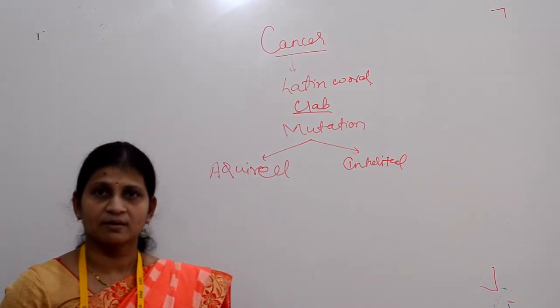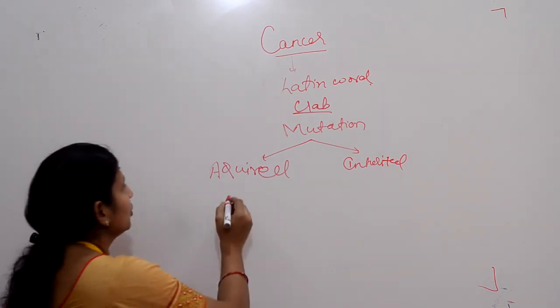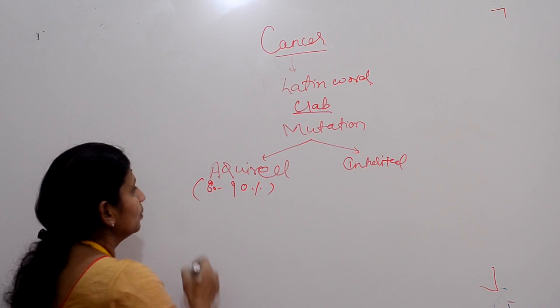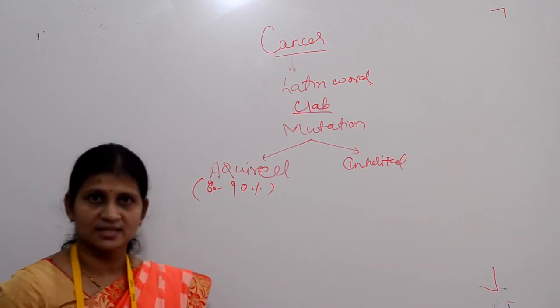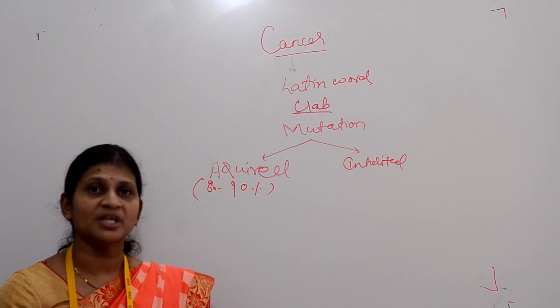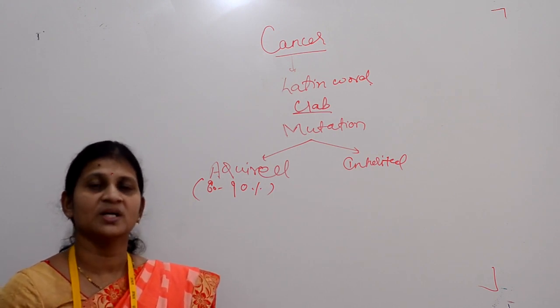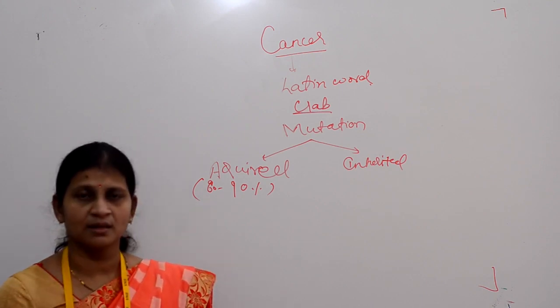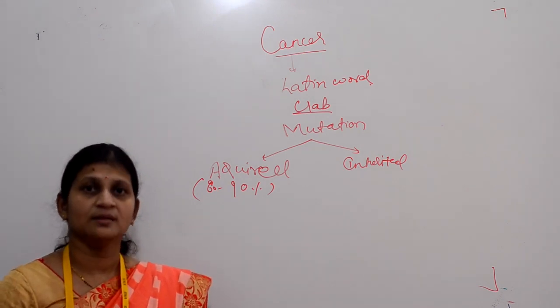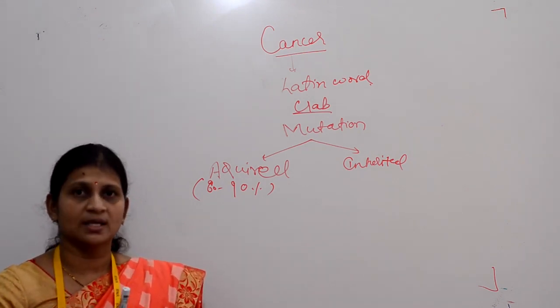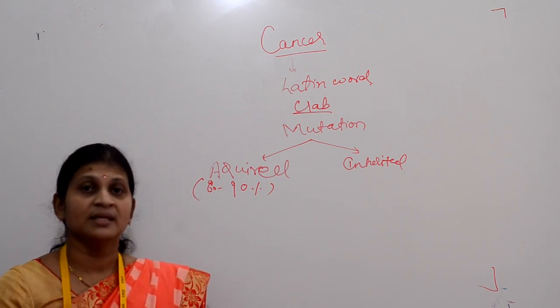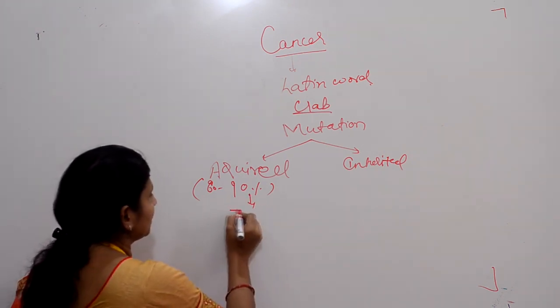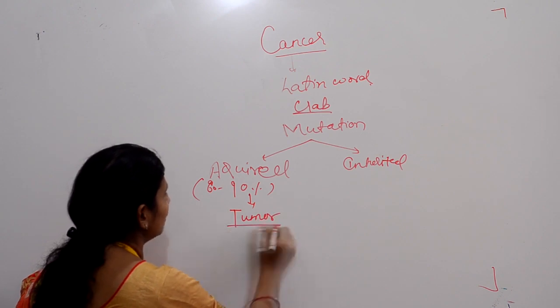In acquired mutation, which accounts for 80 to 90 percent of mutations responsible for causing cancer, they damage the genes in a particular cell during a person's lifetime. This could be a breast cell or colon cell. When there is rapid cell division, there may be formation of an abnormal mass termed as tumor.